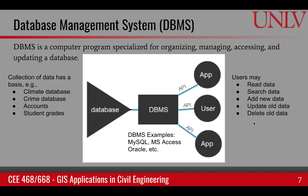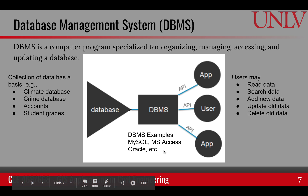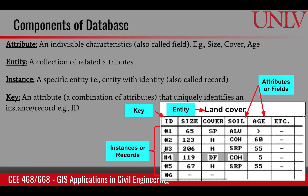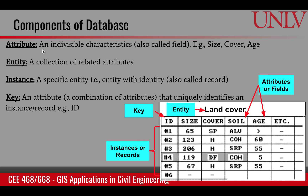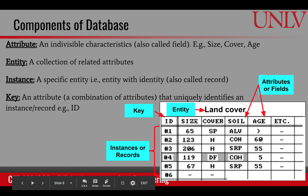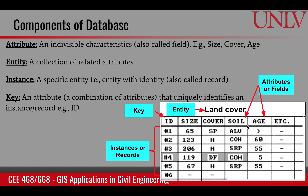Some common DBMS systems include MySQL, Microsoft Access, and Oracle. When we deal with a database, there are some components we should be familiar with. The first is the attribute, which by now we have a good understanding of — it is an indivisible characteristic, also called a field. In our example table, size, cover, age, and soil are all examples of attributes.